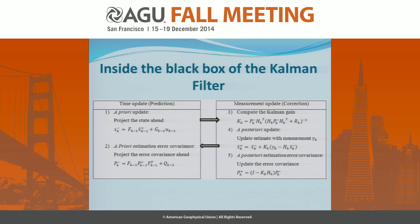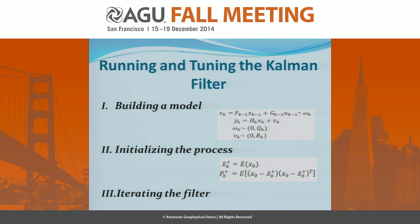What's going on inside the black box of the Kalman filter? When we run the Kalman filter, first the filter uses the time update equations to predict the best estimation of the next point, and then having feedback from the measurement of that particular point, it corrects its estimations and gives us a posterior update and posterior estimation covariance. That's how the Kalman filter works, and it iterates for each measurement point. To run the Kalman filter, first we need to build a model, then initiate the process with an estimation and process noise estimation, and then iterate the filter for each point.